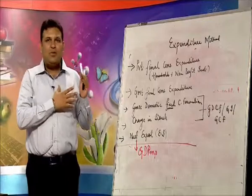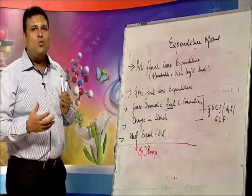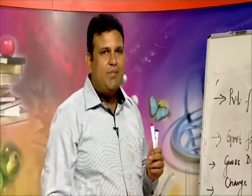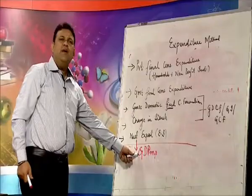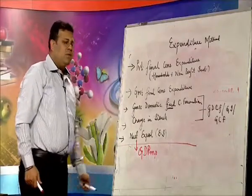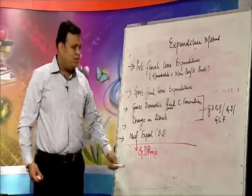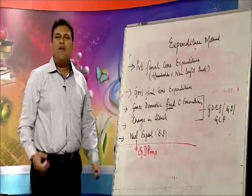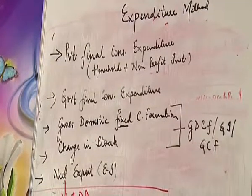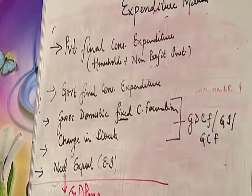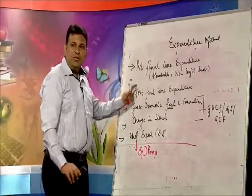Now it is easy to go from GDP at MP to NNP at FC. GDP at MP — deduct depreciation to get net, then deduct NIT (net indirect taxes), then add NFIA to get national. So NNP at FC is nothing but national income. We only deduct depreciation and NIT from GDP at MP.